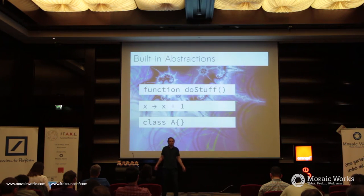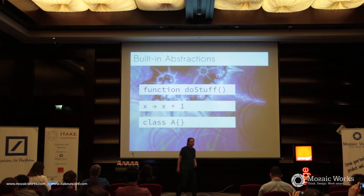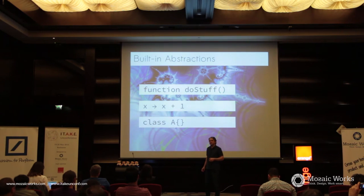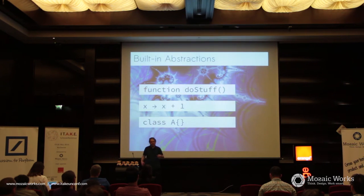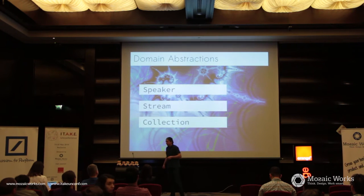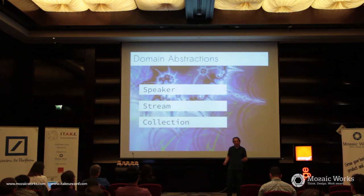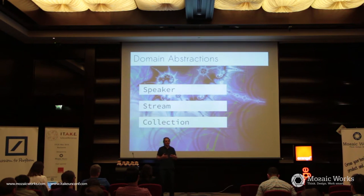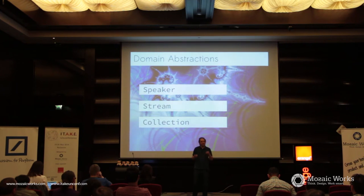The way we did that was by dividing and conquering — by splitting the program into abstractions. There are various types of abstractions. Some of them are built-in abstractions: we created functions, lambdas — these were kind of the first things that came out of thoughts on design. We created classes later on. And then we have domain abstractions, like things like speakers, stream controllers, collections — things that tell us something about how that entity works. Instead of thinking in smaller details, we think at a higher level of abstraction.